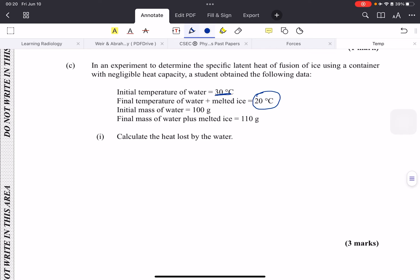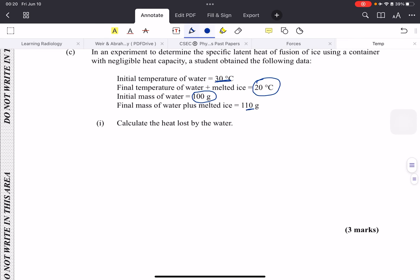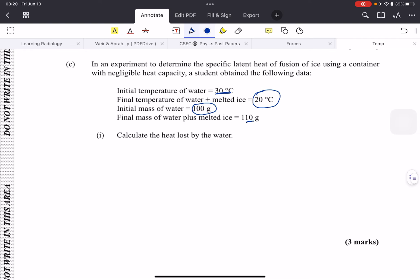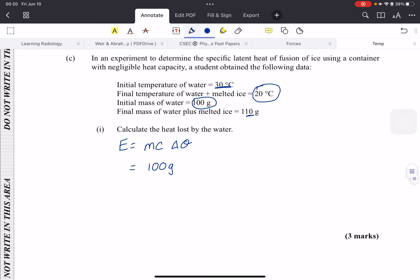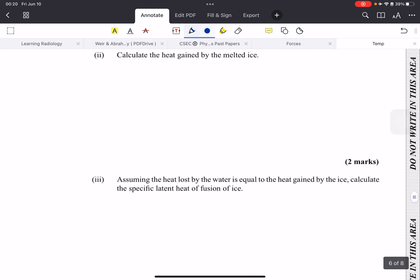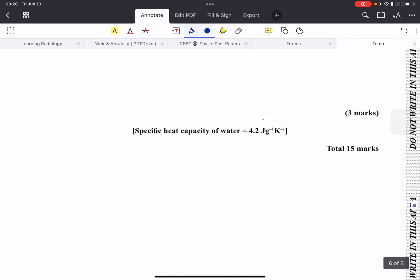They poured some cold water into it and they noticed that the change in temperature was 20 degrees Celsius. The initial mass of the water was 100, and they poured 10 grams of cold water into the 100 grams of the water. We have to calculate the heat lost by the water. This is very simple: it's the same formula, m c delta theta. They want the water, so the mass of the water is 100 grams. Now pay attention to your specific heat capacity and its units.